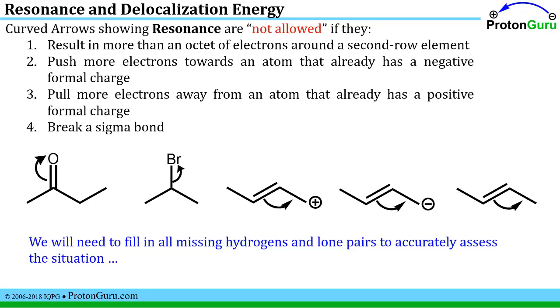You never want to push more electrons towards an atom that is already negative. A negative charge will repel electrons. You never want to pull electrons away from an atom that already has a positive charge. A positive charge wants to pull electrons towards it. And if you're talking about resonance you're not allowed to break sigma bonds. And since these rules have to do with sigma bonds and non-bonding electrons, we better fill in all of the missing hydrogens and lone pairs that aren't always drawn in these line bond structures so that we can accurately assess the situation.